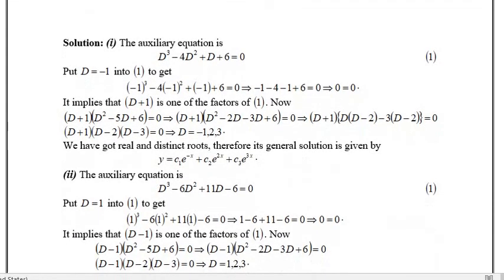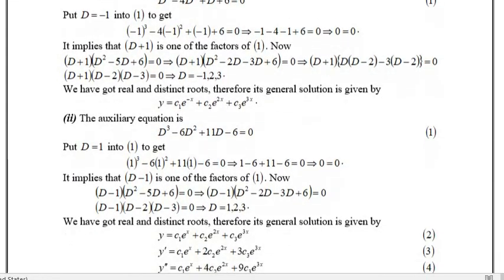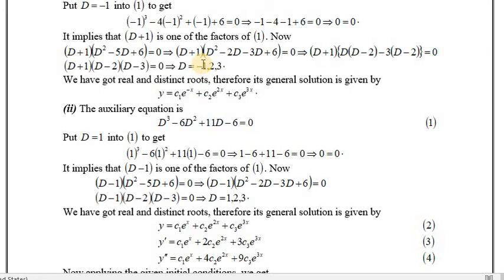Now we have factorized it. The values of D are minus 1, 2 and 3. So m1 is minus 1, m2 is 2, m3 is 3. So we will place them here: y equal to c1 e^(-x) plus c2 e^(2x) plus c3 e^(3x).